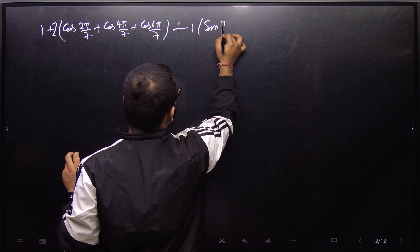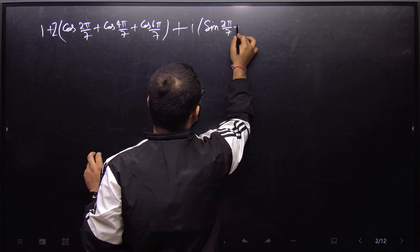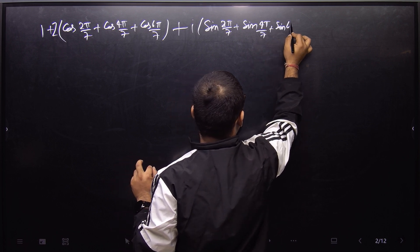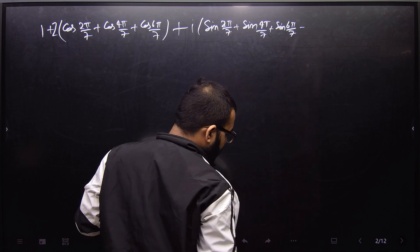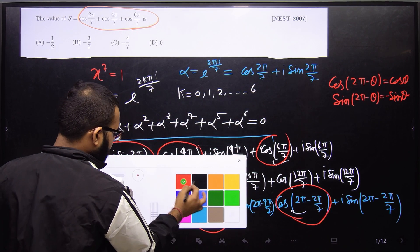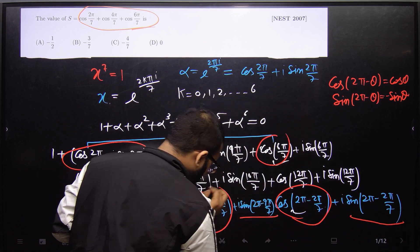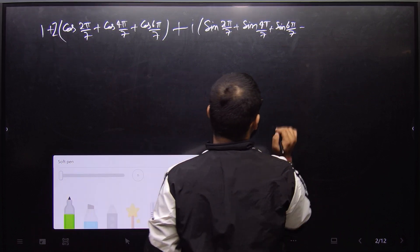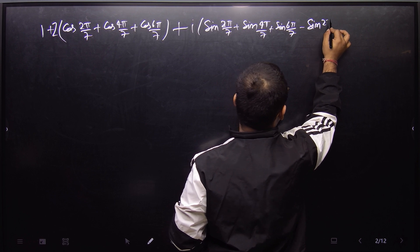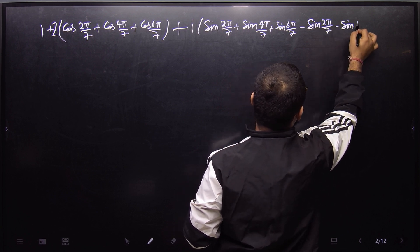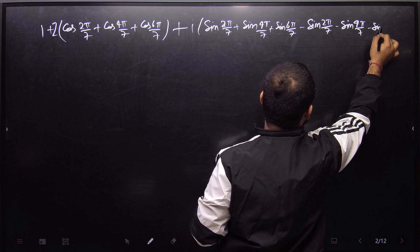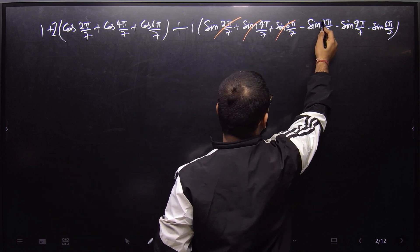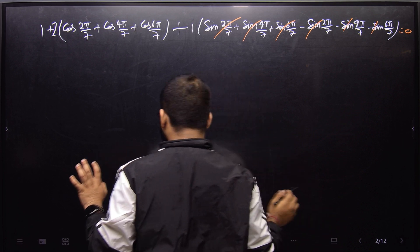Now writing the imaginary part: we have sin(2π/7) + sin(4π/7) + sin(6π/7) from α, α², α³. From α⁴, α⁵, α⁶ using the 2π − θ identity we get −sin(2π/7), −sin(4π/7), −sin(6π/7). So all imaginary terms cancel out, which is consistent since the sum of roots equals 0.